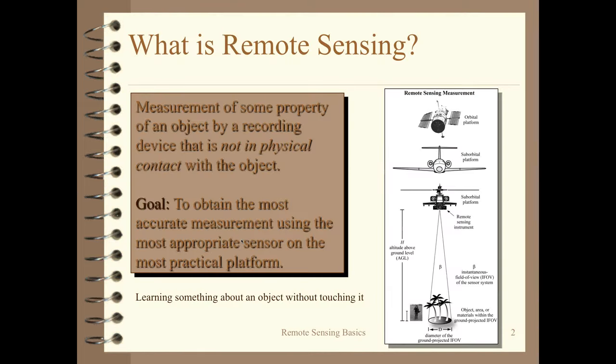So what's remote sensing? Remote sensing is learning something about an object without touching it — the measurement of some property from a recording device where you're not in physical contact with it. The goal is to obtain the most accurate information using the most appropriate sensor on the most practical platform. You can be within a few feet of an object, a few miles, or even in space hundreds of miles away.